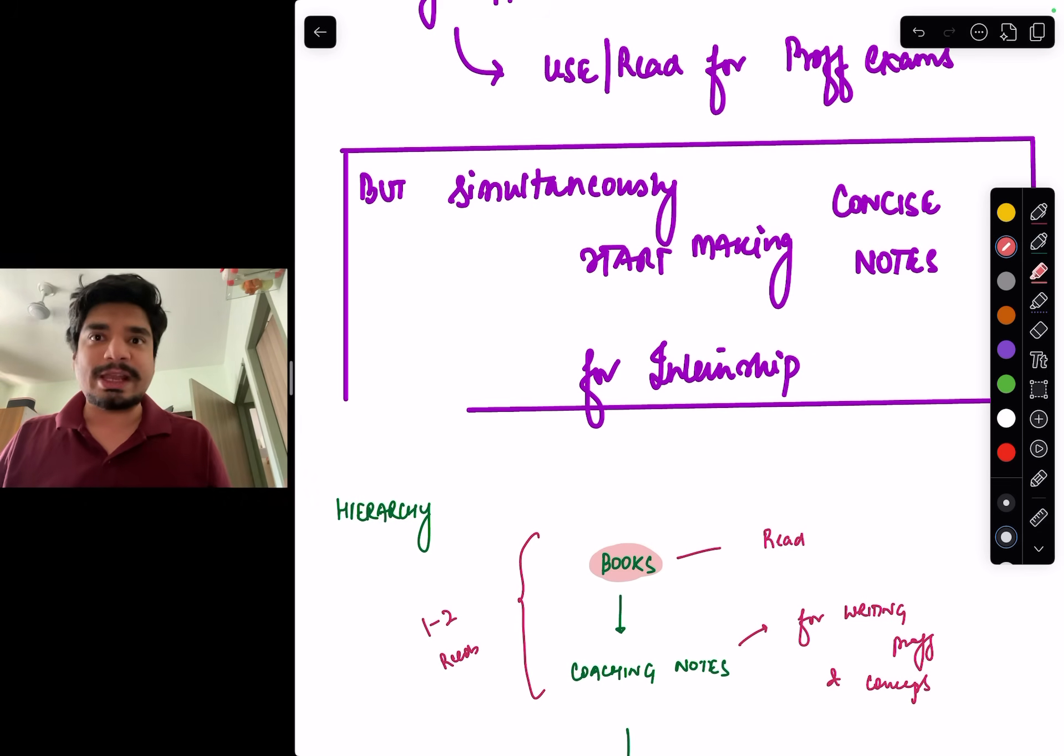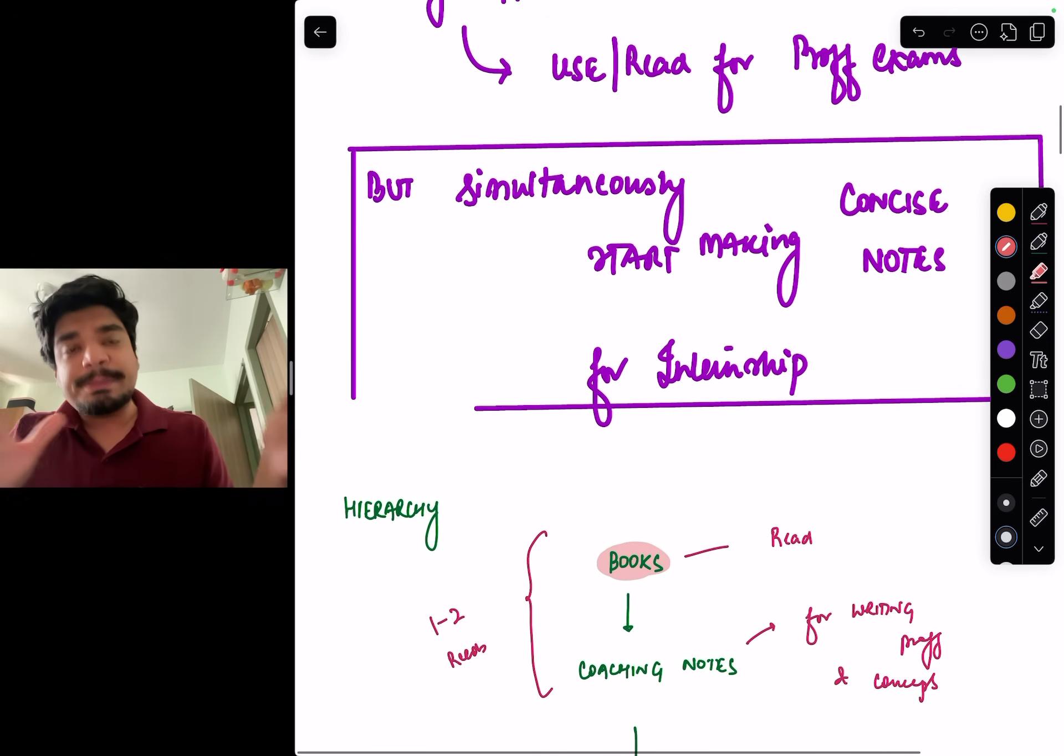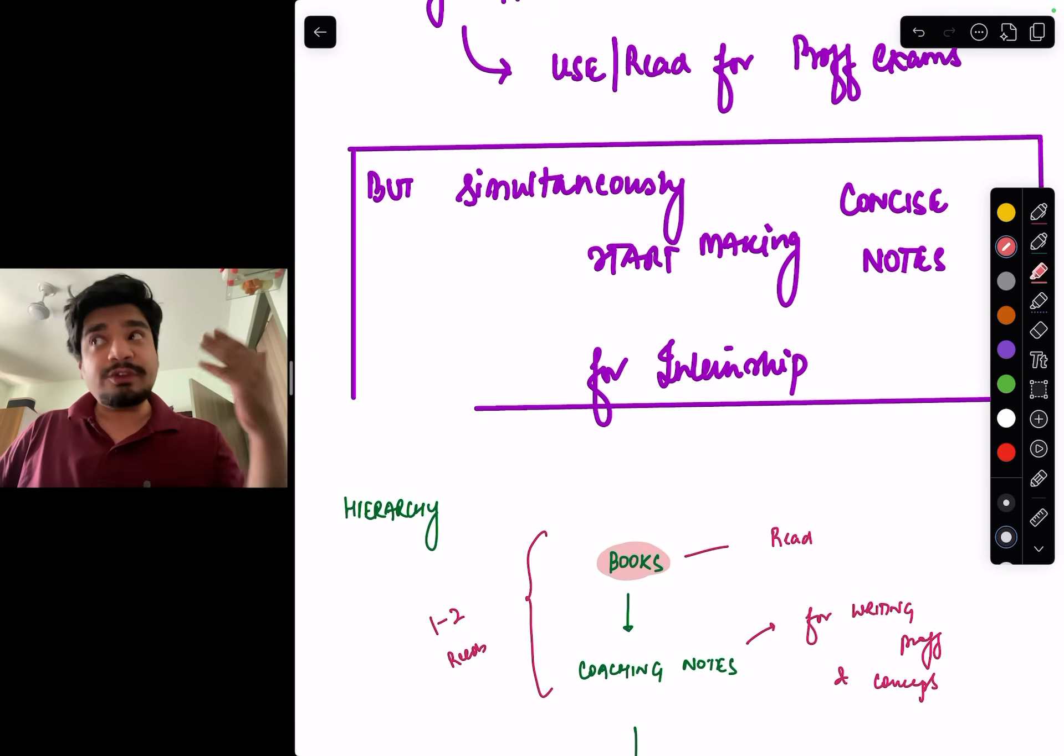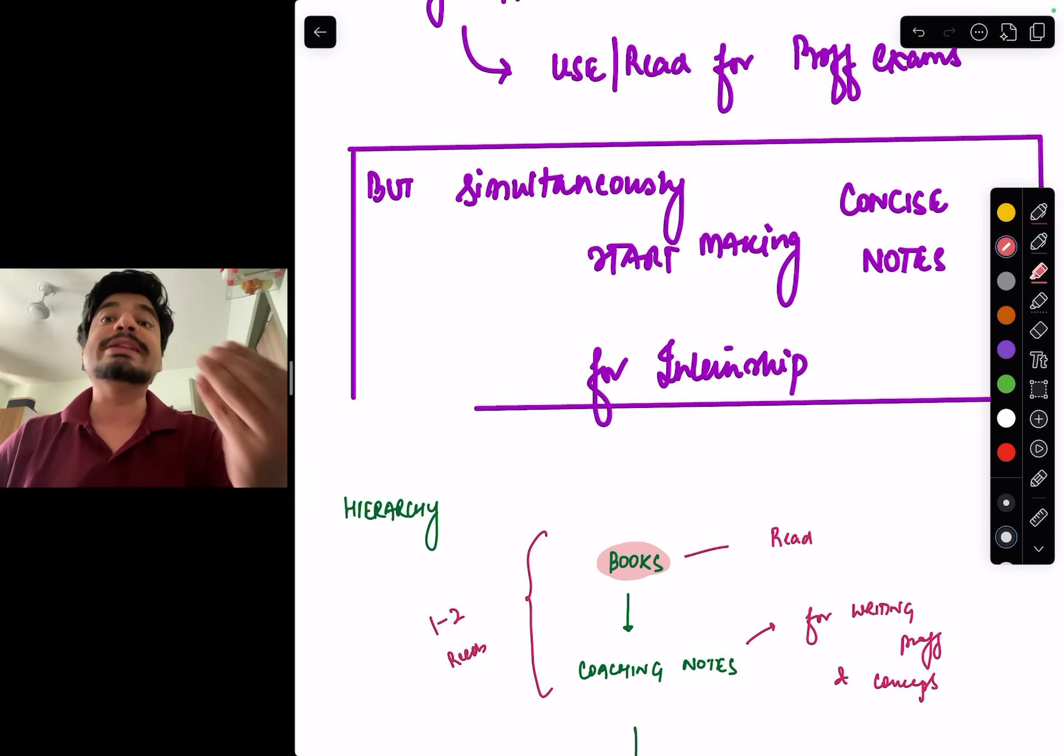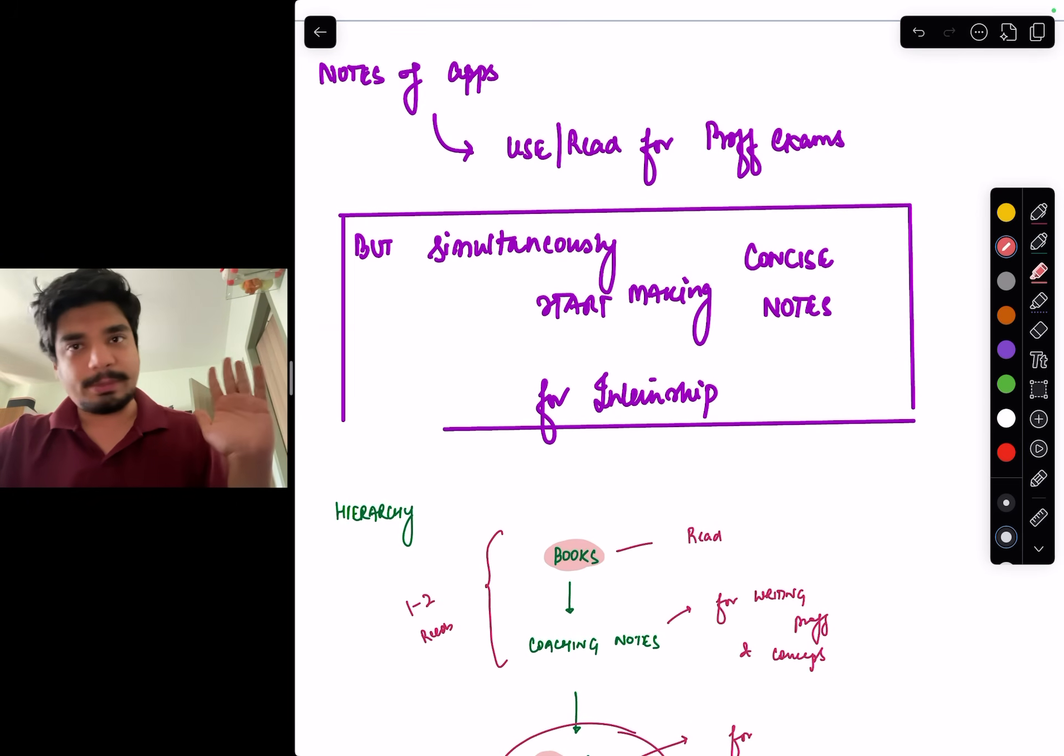If your internship is very light. For example, in AIIMS, we used to have a very light internship. The internship, people actually start making concise notes in internship. So if your college doesn't have a hectic internship, you are able to spare seven or eight hours on a daily basis during internship also during that point of time. Then maybe you can make these concise notes in internship also. But if you know your college has a tough internship, it has a hectic internship, the job of making concise notes starts in the third and fourth year itself. This is a plain and simple formula.